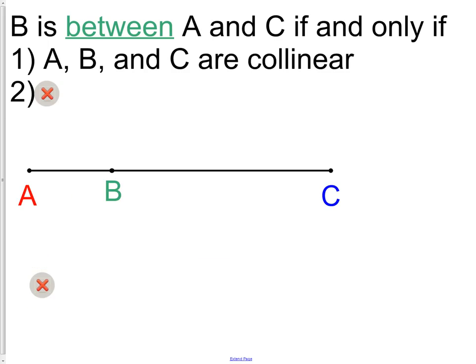One, A, B, and C have to be collinear. So you cannot be between two things if you are not on the same line as them. Second, if you add up the distance from A to B and the distance of B to C, you are going to equal the whole line. Two small parts equal the one large part.